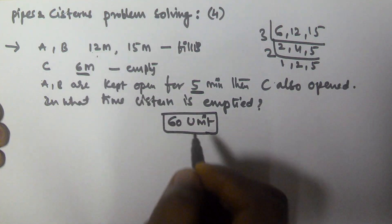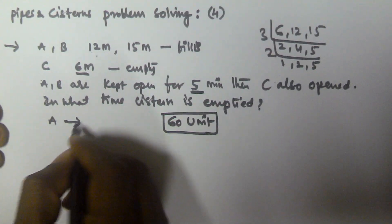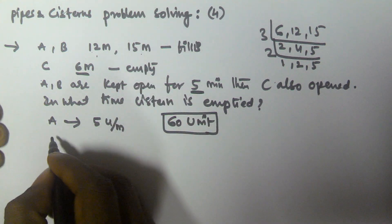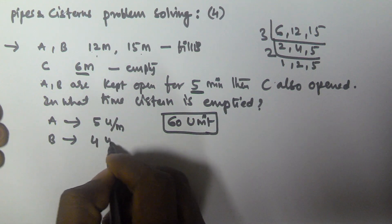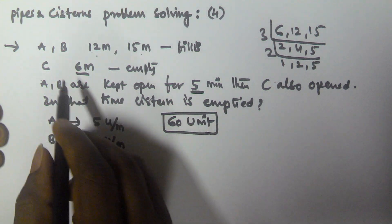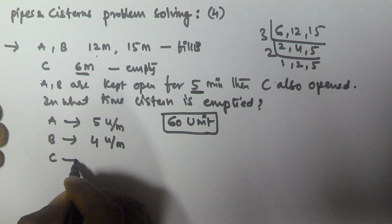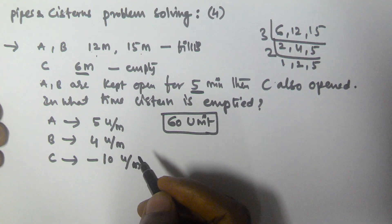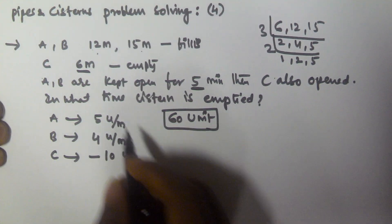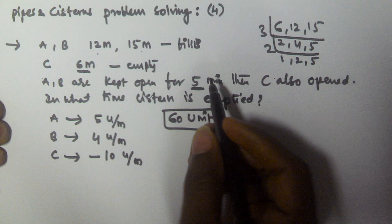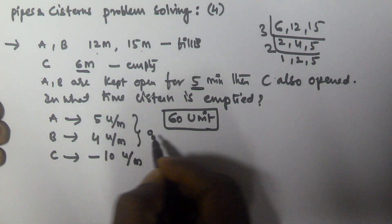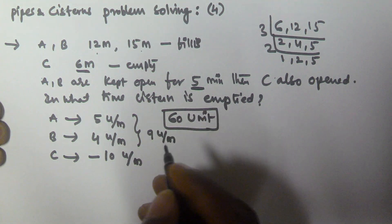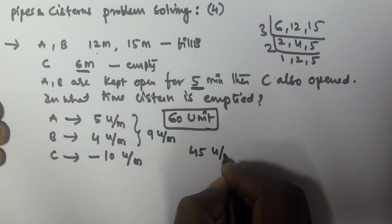A takes 12 minutes to fill 60 units, so A fills 5 units per minute. B takes 15 minutes to fill the tank, so B fills 4 units per minute. C takes 6 minutes to empty the tank, so C empties 10 units per minute. Initially A and B are kept open for 5 minutes — working together they fill 9 units per minute, so in 5 minutes they fill 9 × 5 = 45 units.